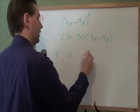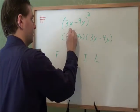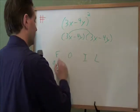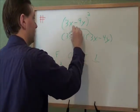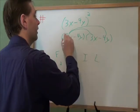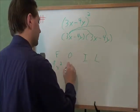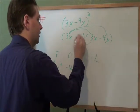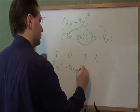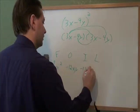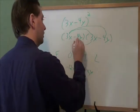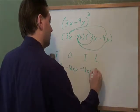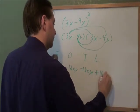First, outside, inside, last. Our first pair is 3x and 3x. 3 times 3 is 9, x times x is x². On the outside, we have 3x and negative 4y. 3 times minus 4 is minus 12, x times y is xy. On the inside, minus 4 times 3 is minus 12, y times x is xy. You generally put letters in alphabetical order. For the last pair, minus 4y times minus 4y is positive 16y².